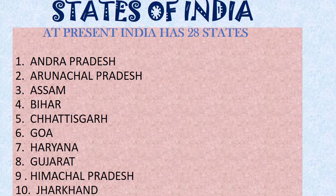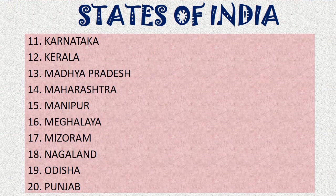The 11th state onwards: Karnataka, Kerala, Madhya Pradesh, Maharashtra, Manipur, Meghalaya, Mizoram, Nagaland, Odisha, Punjab. Once again from the 11th state: Karnataka, Kerala, Madhya Pradesh, Maharashtra, Manipur, Meghalaya, Mizoram, Nagaland, Odisha, Punjab.